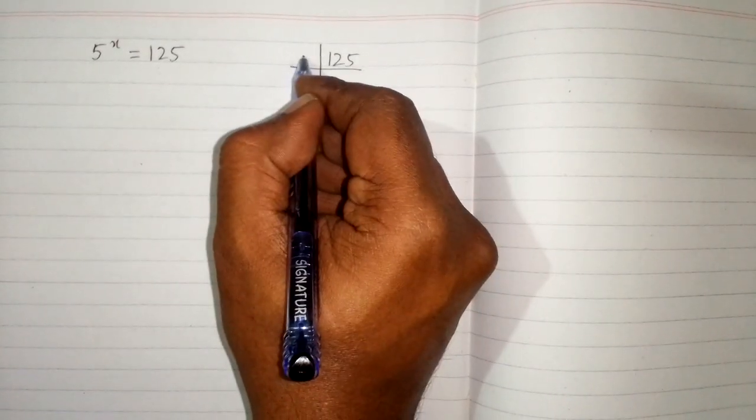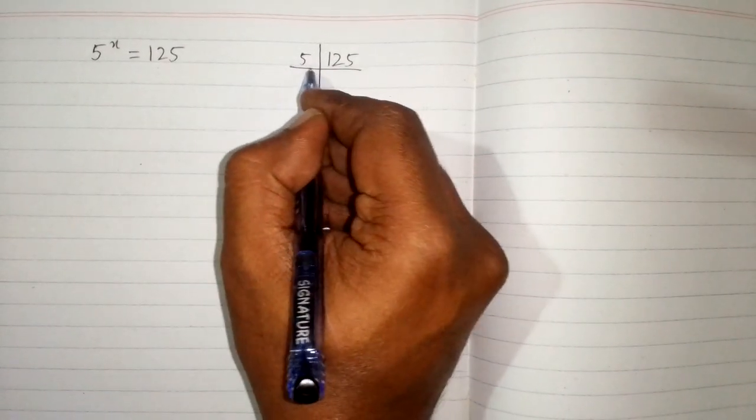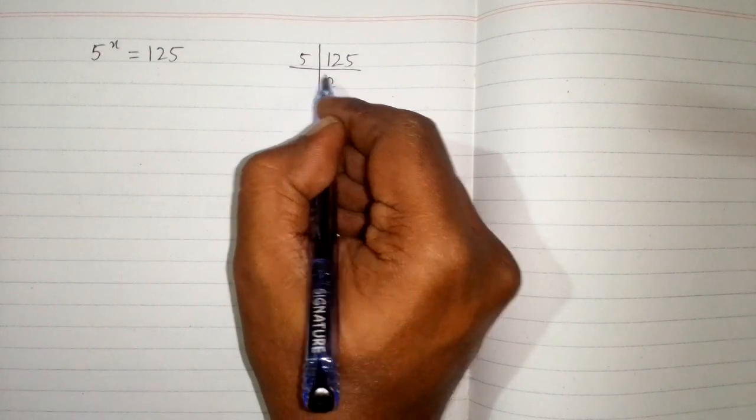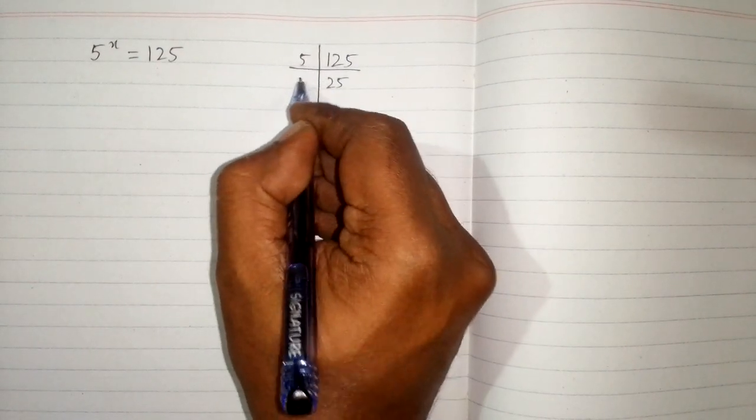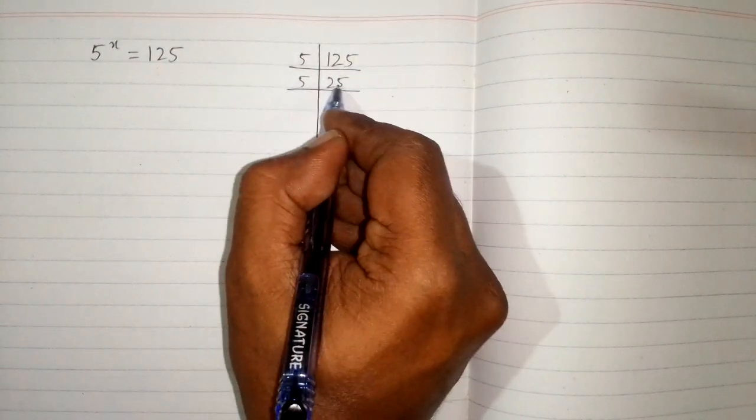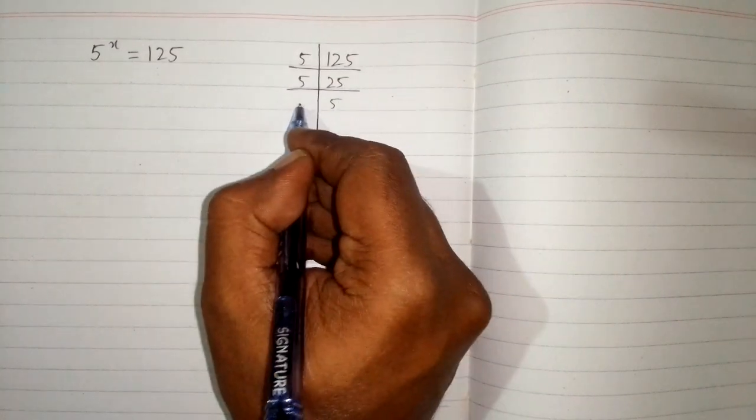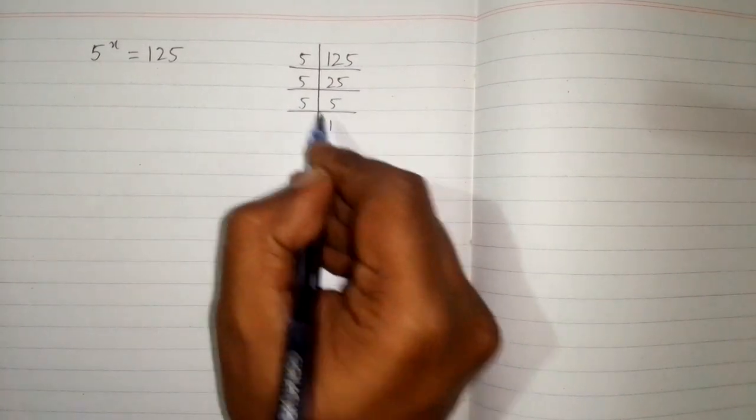So 125 can be divided by 5. 5 times 5 is 25, and 5 twos are 10, 5 fives are 25. Now we divide 25 by 5, so we have 5 times 5, and then 5 ones are 5.